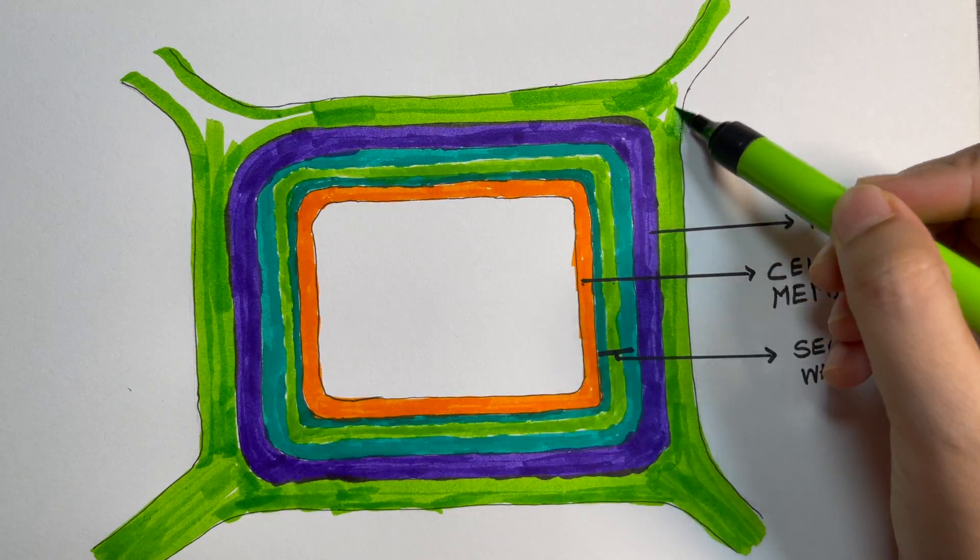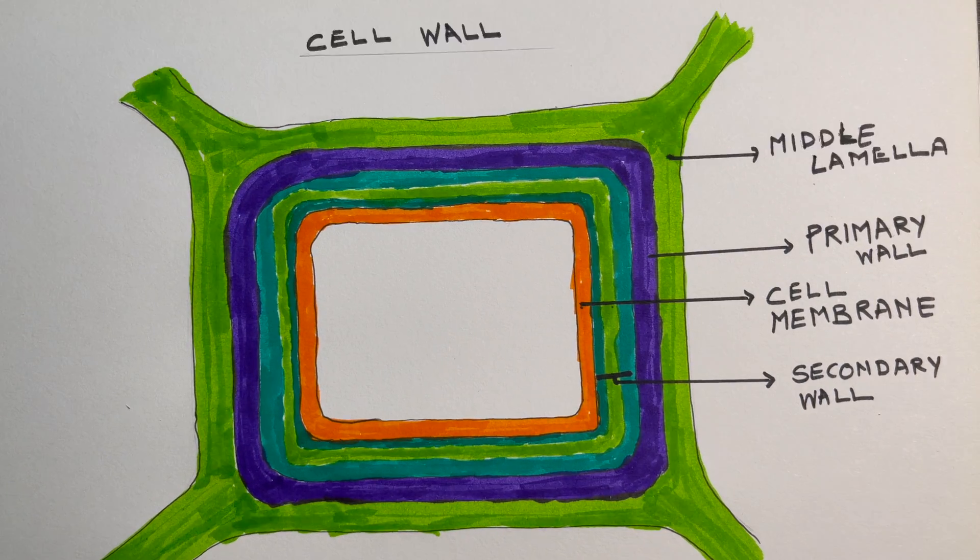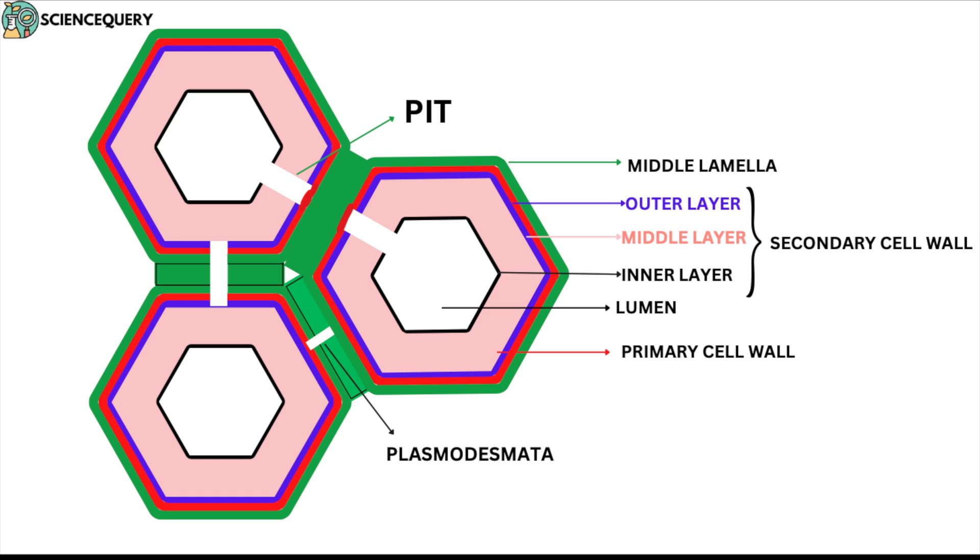Other structures that are associated to the cell wall are pits and plasmodesmata. Pits are the unthickened areas of the cell walls. The plasmodesmata are the gaps between the cell wall that connect the cytoplasm of all the adjacent cells.